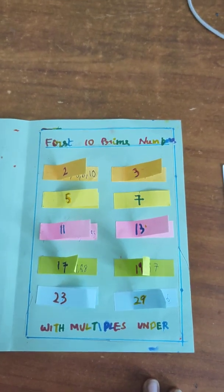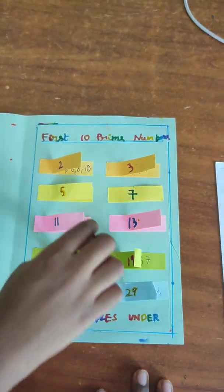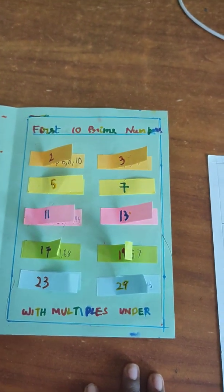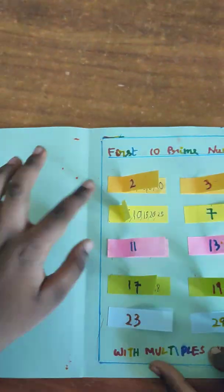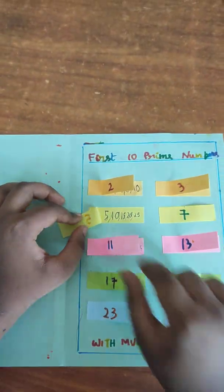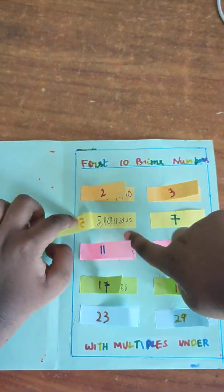Aditya selected the multiple of 5. There's only one multiple of 5, which is 5. Now, the multiples of 5 are 5, 10, 15, 20, 25.